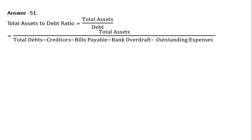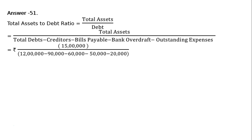Total assets is given directly. Debt is out of total debt — if you deduct current liabilities, that is creditors minus bills payable minus bank overdraft minus outstanding expenses, we will be getting long-term debt. Then our answer will be rupees 15 lakhs upon rupees 12 lakhs minus